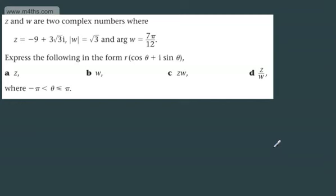In this video, we're going to do our second example of multiplying and dividing complex numbers. In this question, we're told z and w are two complex numbers, where z equals negative 9 plus 3√3i. We're told the modulus of w equals √3, and the argument of w is 7π/12.